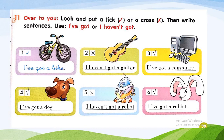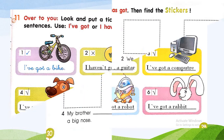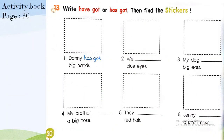Tick means 'I have got a rabbit.' Well done, students! Now let's go to page 30. Write 'have got' or 'has got', then find the stickers. The exercise is very easy.